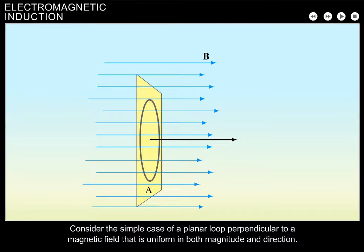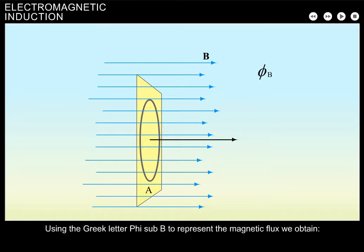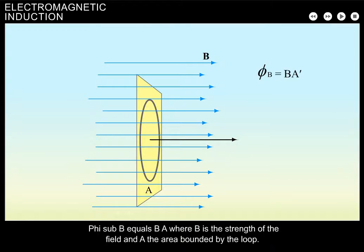Consider the simple case of a planar loop perpendicular to a magnetic field that is uniform in both magnitude and direction. Using the Greek letter phi sub b to represent the magnetic flux, we obtain phi sub b equals bA, where b is the strength of the field and A the area bounded by the loop.